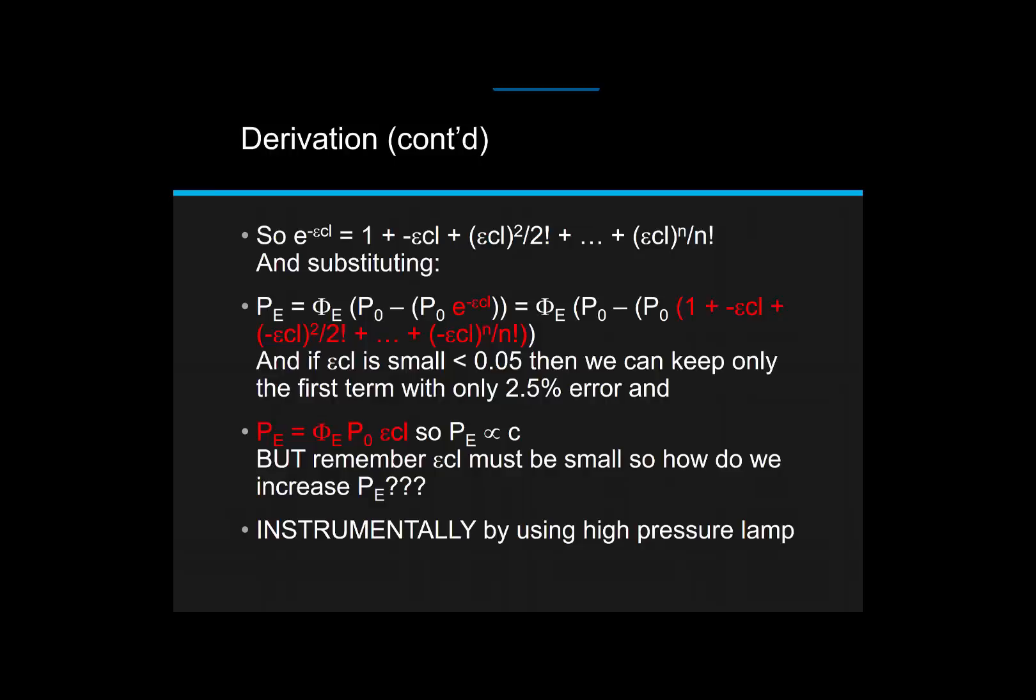What I'm left with is the expression shown at the third bullet point in red. Pe equals the quantum yield for emission times the incident power times the product of epsilon Cl. So the bottom line here is that the emission intensity is proportional to concentration as long as I don't have the sample absorbing a lot of the light. So you're going to have to think about how are we going to do the experiment so we can get a significant signal, Pe, or signal in terms of emitted light. I'll tell you that one thing that we do experimentally is we actually use a high-pressure lamp as the light source in the emission spectrometer.